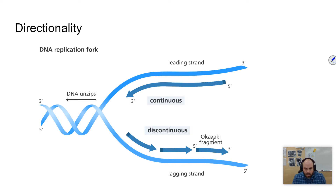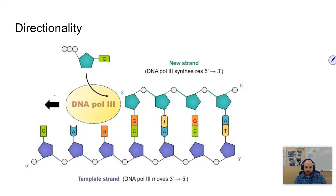Directionality in the DNA molecule is very important. DNA is read such that the enzymes are going to move from a three prime to a five prime direction. If you remember when we talked about the directionality of the DNA molecule, we talked about how these sugars have numbers — they're numbered one, two, three, four, five. Here's the three prime sugar, and over here is the five prime sugar, and this is going to be a three to five prime direction.